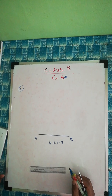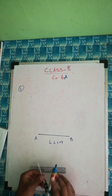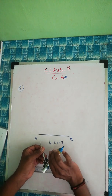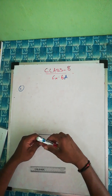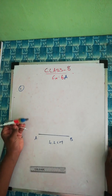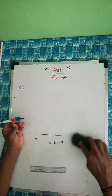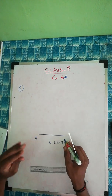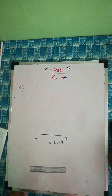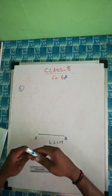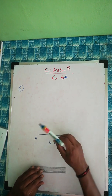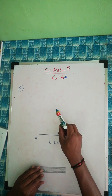AB is 4.2 cm, and BC is 4.8 cm — so BC will be a little bit bigger than AB. Take BC as 4.8 cm and mark it.